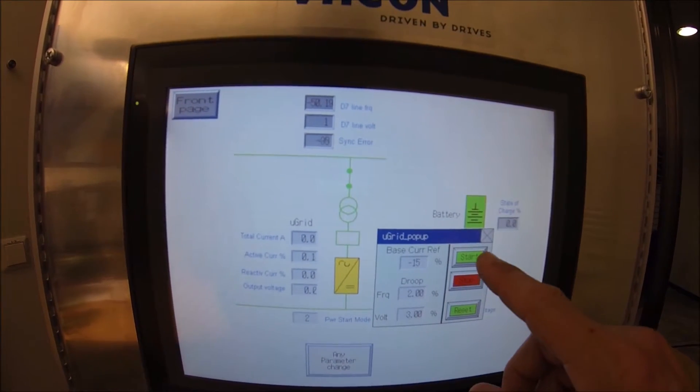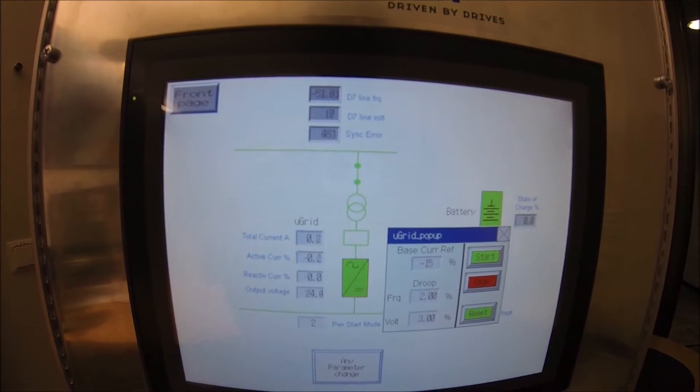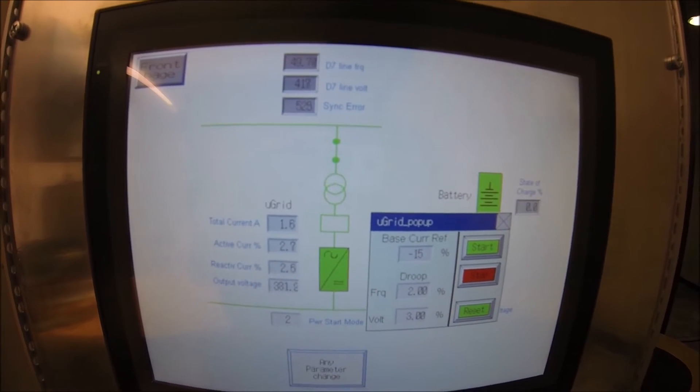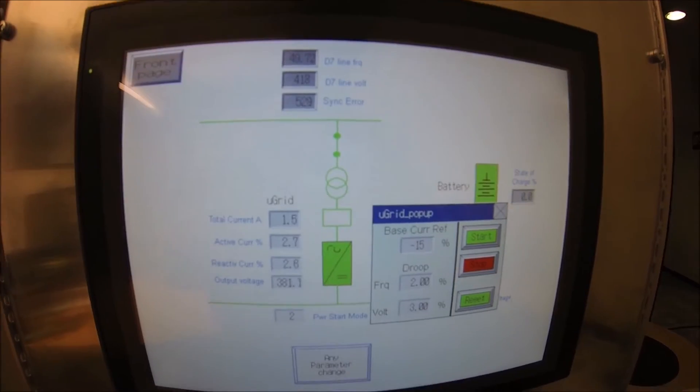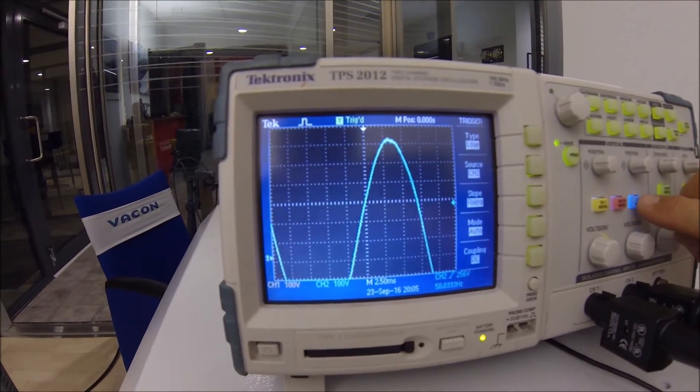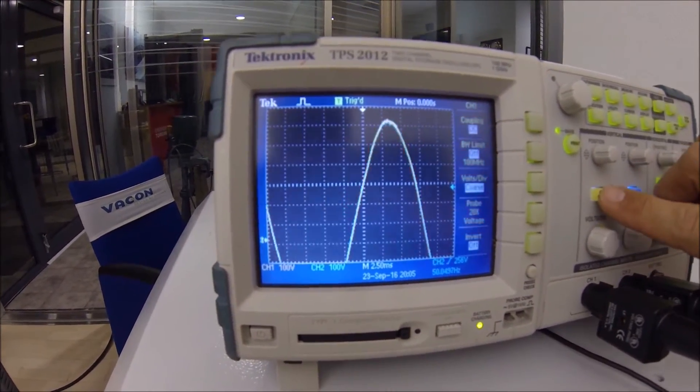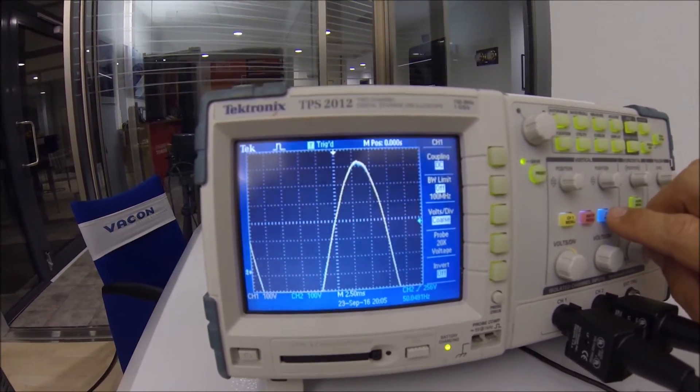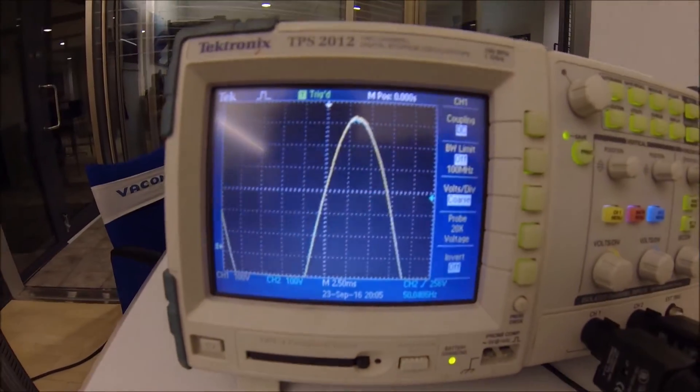If I start my drive now it will synchronize to the grid just like an active front end would do. Looking at the oscilloscope we will see now that these two curves are exactly the same, of course, because it's measuring on each side of this contactor. So when the contactor is closed this is the same.